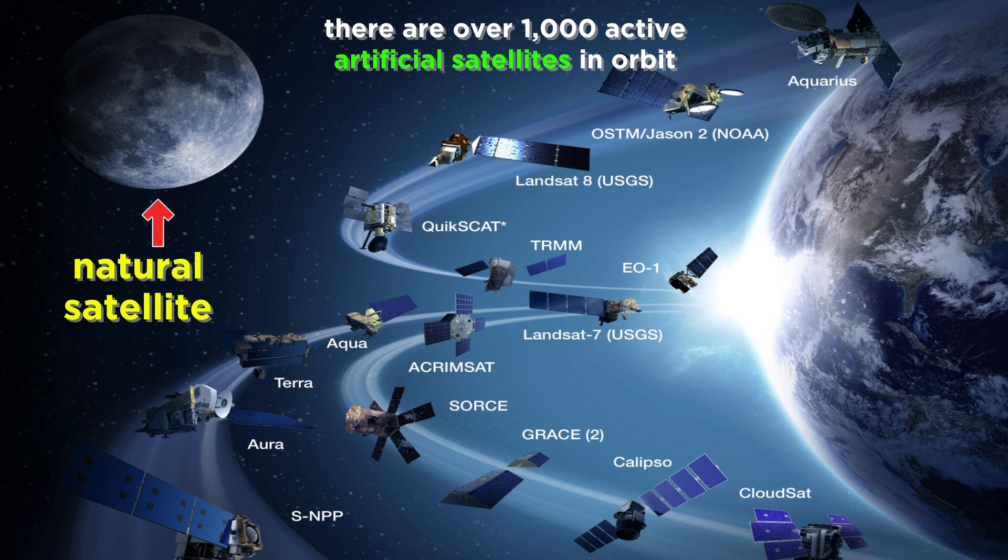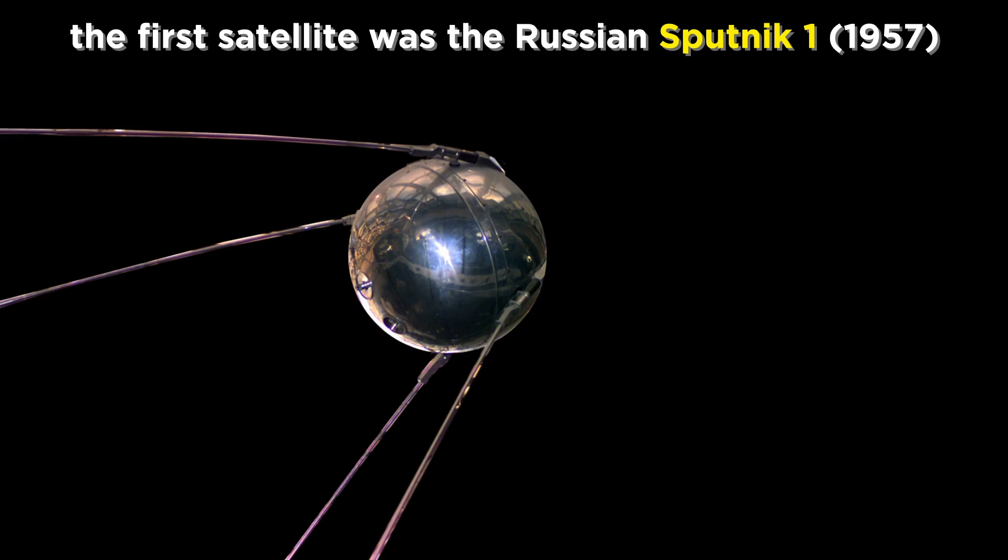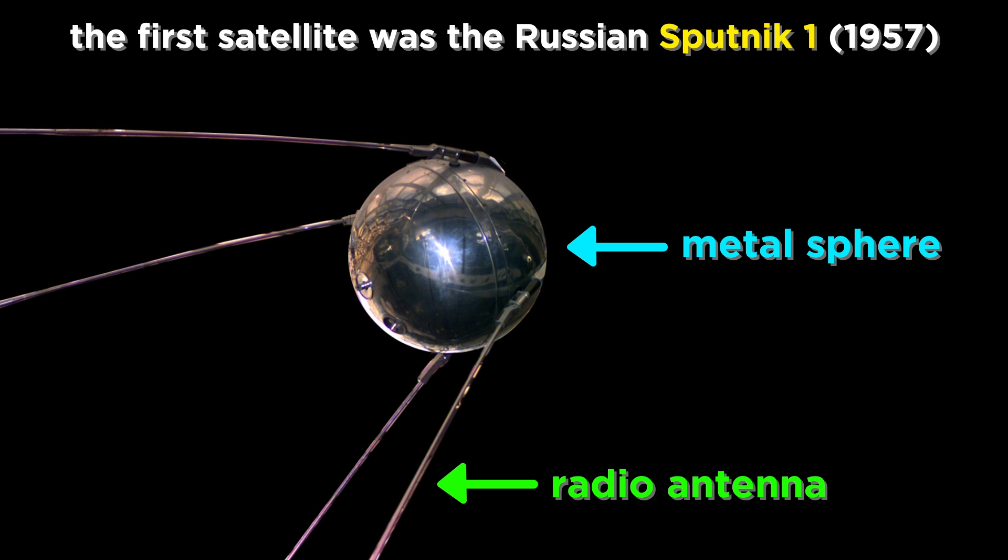The artificial ones orbit much more closely than the moon does. So what are these things? How did we get them up there, and what do they do? The first satellite launched into orbit was the Russian Sputnik 1 in 1957, and it was pretty much just a small metal sphere with some radio antennas.